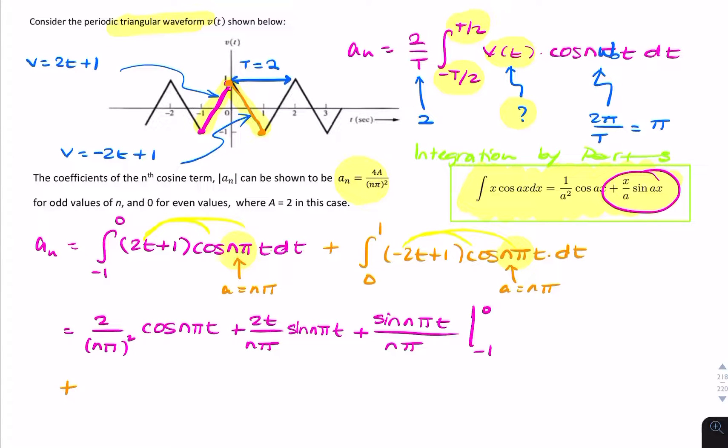But this time from 0 to 1, and we need to include this minus sign here. So let me just write that out. It'll be minus 2 over n pi squared cosine n pi t, minus 2 over n pi sine n pi t, plus sine n pi t over n pi, from 0 to 1.